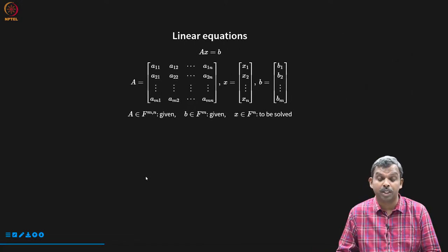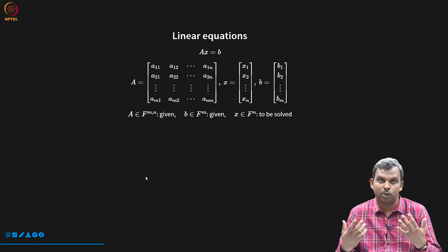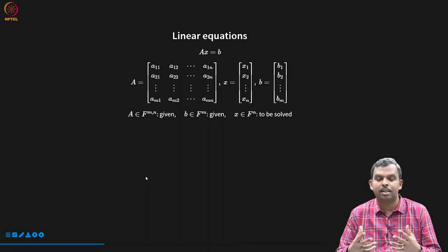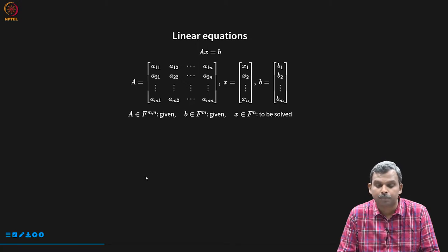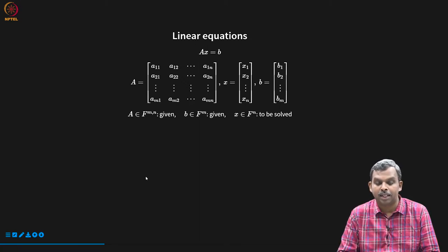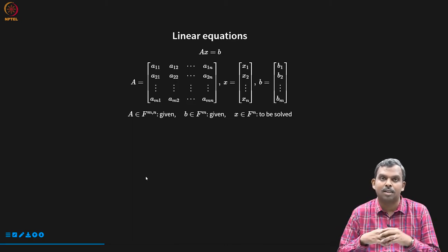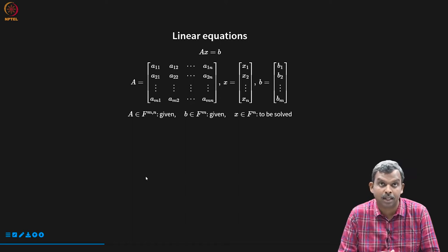What is the linear equation? It is Ax equals b. Many of you probably have already seen it before. We will in general keep A as an m×n matrix from the scalar field F. Each element a_ij is the element at the ith row and jth column.